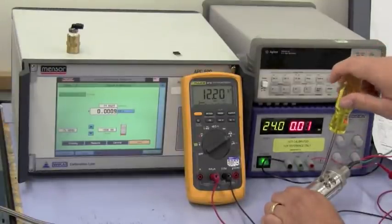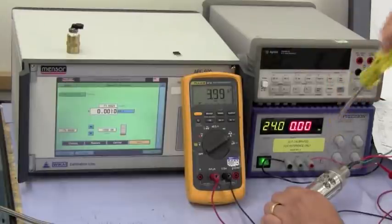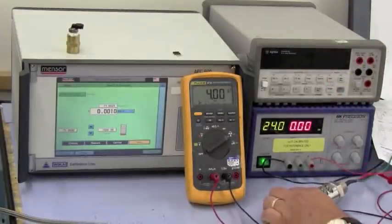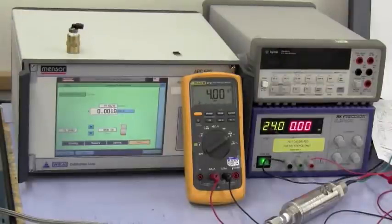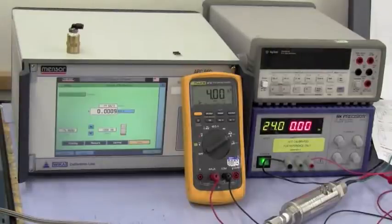I'll now close the CAL button. And you'll see that we've dropped down to 0, 4 milliamps. And you'll see that there's no interaction between 0 and span. I did not have to re-zero my transmitter.